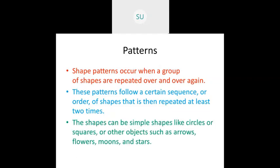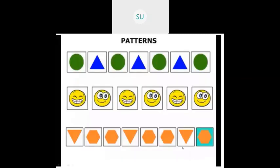Shapes in a pattern can be simple shapes like circles and squares, or other objects such as arrows, flowers, moons, and stars. For example, a green circle followed by a blue triangle, repeated over and over, forms a pattern. After the last green circle, we would continue with a blue triangle.